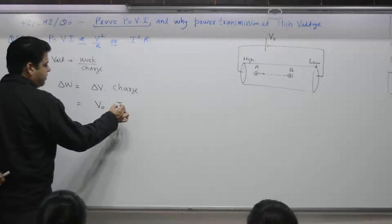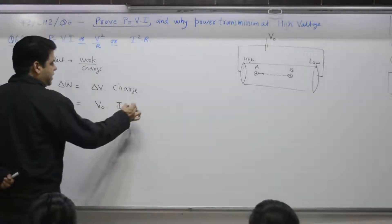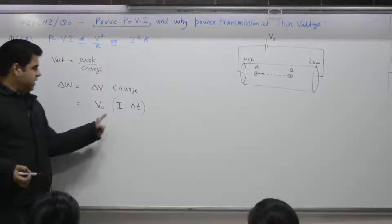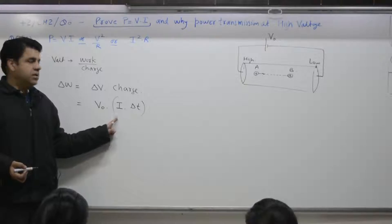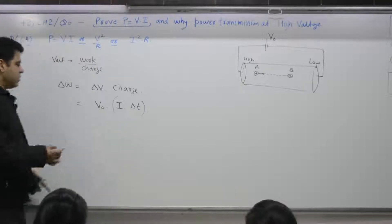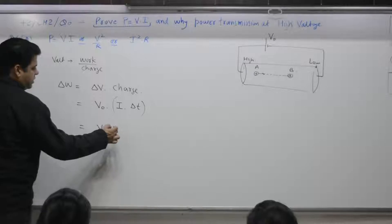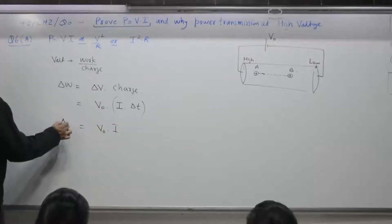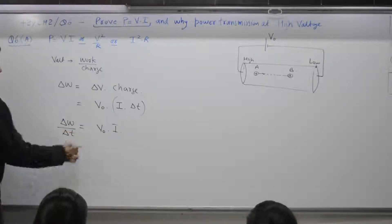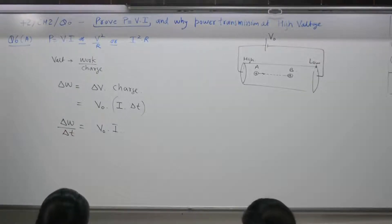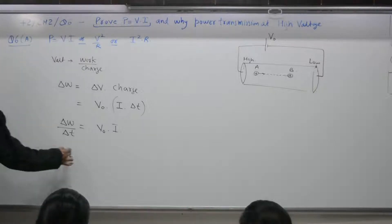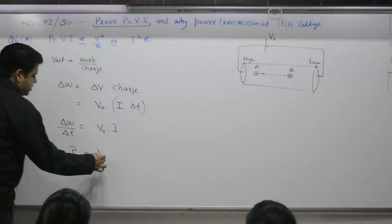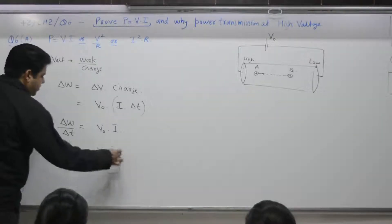Charge. If current flowing per unit time into time into time is delta T. So it is V naught into I. Delta W. Small work by small time. Rate of doing a work. Work per unit time is what? Power. Power. T is equal to T is equal to what? V naught into I. This is one.